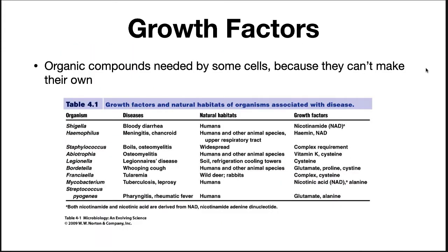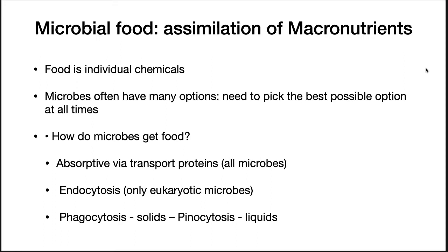Growth factors are organic compounds needed by some cells that must be present in the environment. These strains cannot make them on their own. The specific growth factors a bacterium needs are strain specific. Shigella requires NAD for its growth. Streptococcus pyogenes cannot make glutamate or alanine and must obtain these nutrients from its environment. We now know what nutrients microbes need: macronutrients, micronutrients, trace elements, and growth factors.